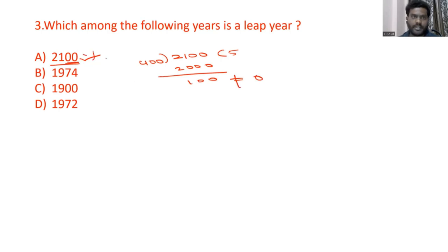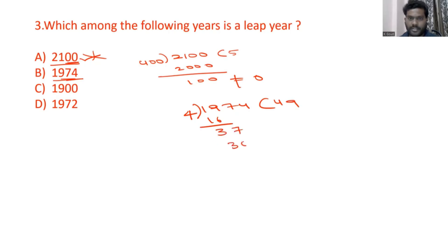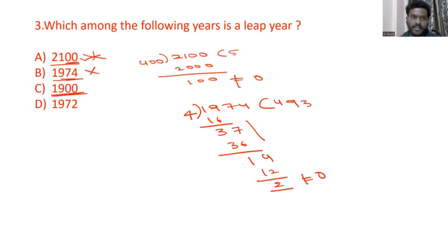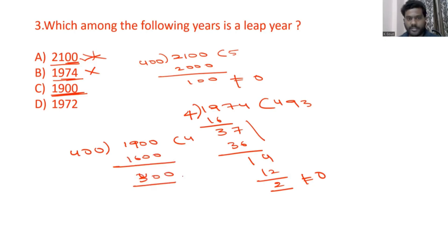Now consider 1974 — it is not a century, it is a normal year, so we divide by 4. Dividing 1974 by 4 gives a remainder of 2, so 1974 is not a leap year. Next, consider 1900 — it ends in two zeros, so it is a century. 1900 divided by 400: 400 times 4 is 1600, giving a remainder of 300, which is not equal to 0.